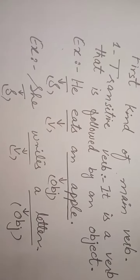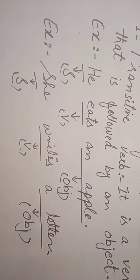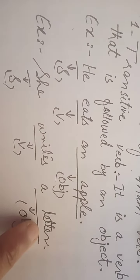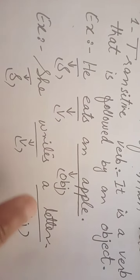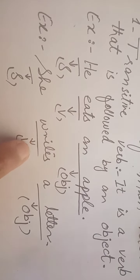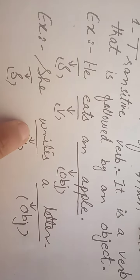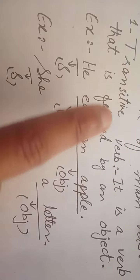Next one example is she writes a letter. In this statement, we can see a word letter. Letter is an object and write is a verb. So when we see in a sentence object, that type of verb in a sentence will be called transitive verb.